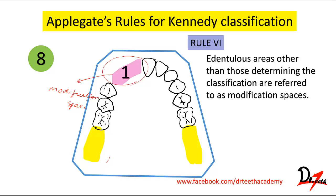If one additional space is present, it is modification one. If another tooth is also absent in a separate area, it is modification two. And if yet another area is absent, it is modification three.